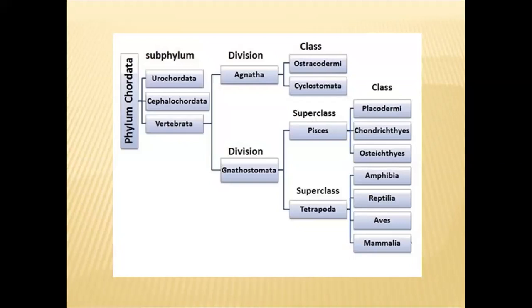Before entering into the topic, let us look at the systematic position of the Sarcopterygii group. As we have seen in previous classes, Phylum Chordata includes Acraniata and Craniata. Craniata is also called Vertebrata. In this Vertebrata group, we have Agnatha and Gnathostomata. Under Gnathostomata, we have two superclasses: Pisces and Tetrapoda.